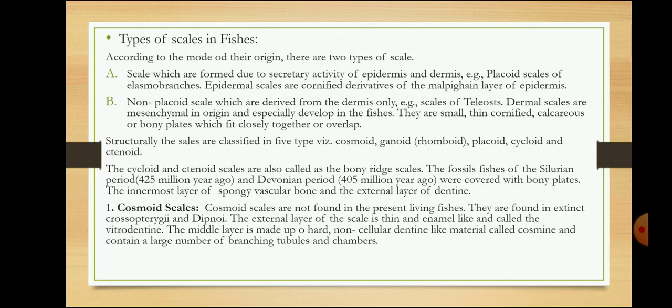In most fishes, the skin is covered with an exoskeleton in the form of scales. Some fishes are without scales, for example catfish, while polydons and acipensers exhibit an intermediate condition. The scales undergo several modifications.